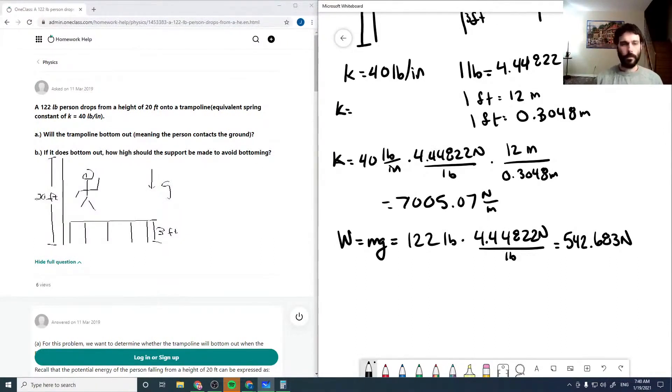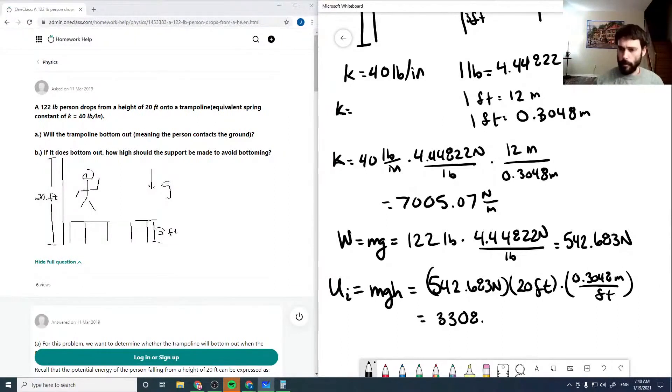Okay, so now our initial, we can use conservation of energy here. So our initial energy is our gravitational energy, which is 542.683 newtons times our initial height, which is 20 feet times 0.3048 meters per foot, which is 3308.19 joules.